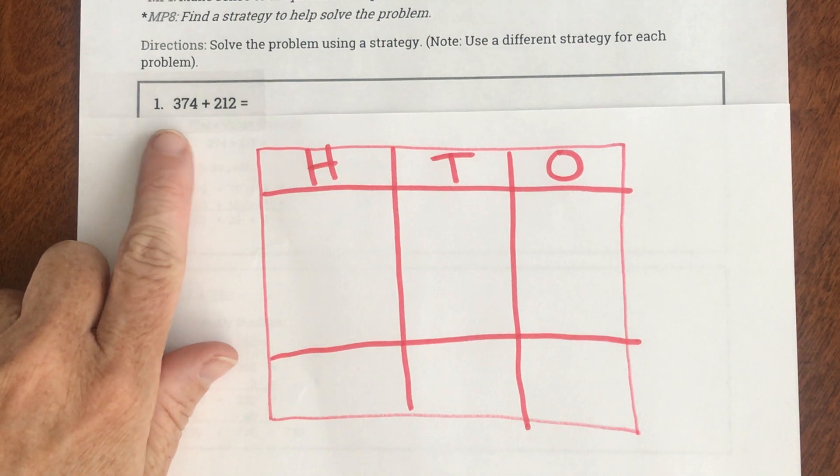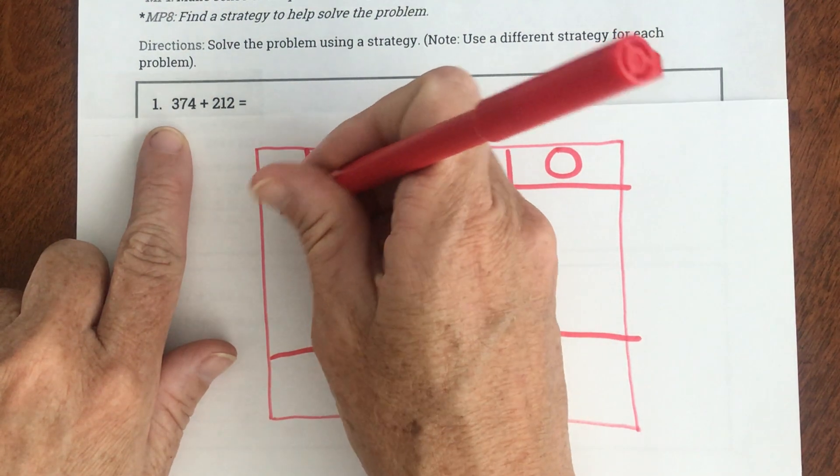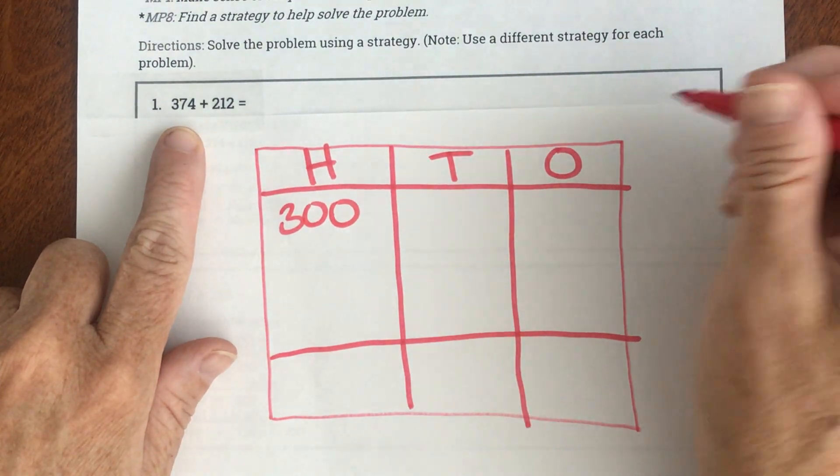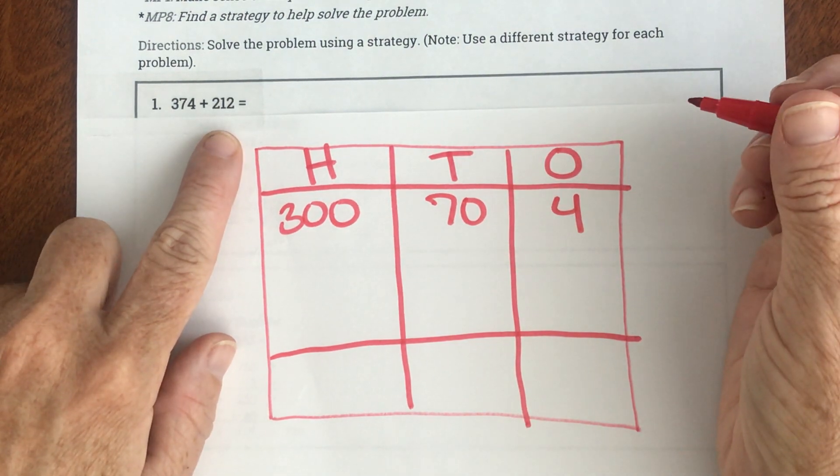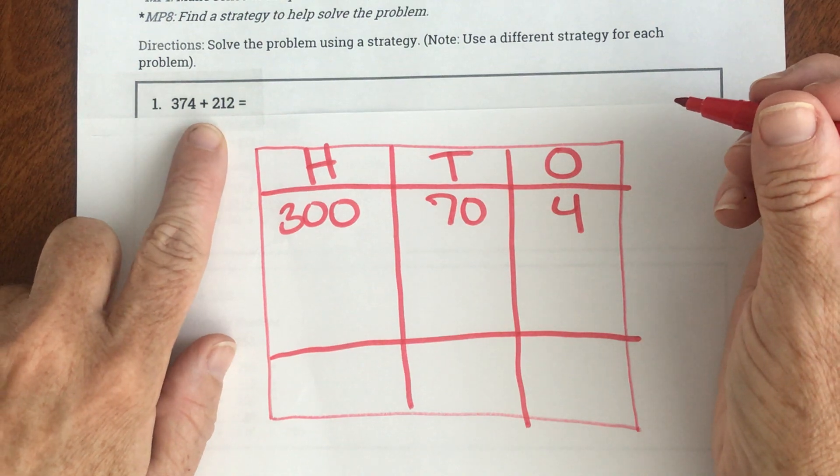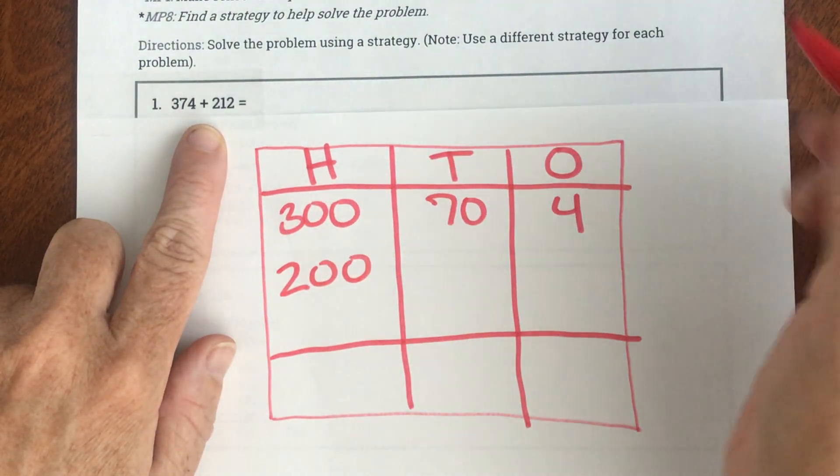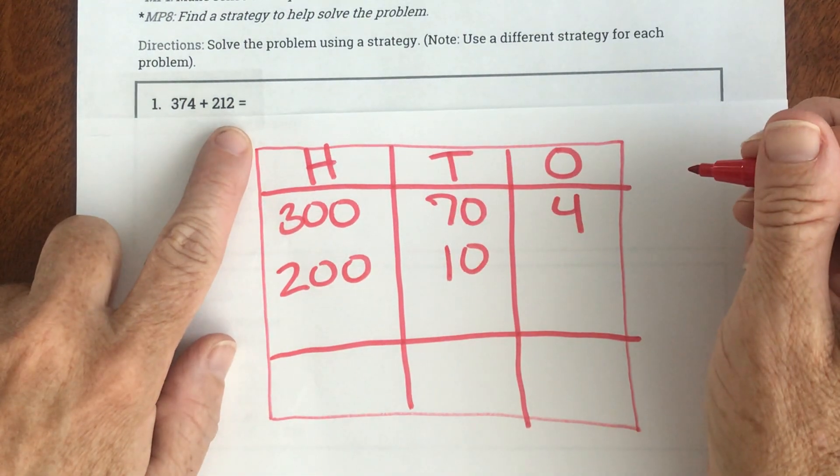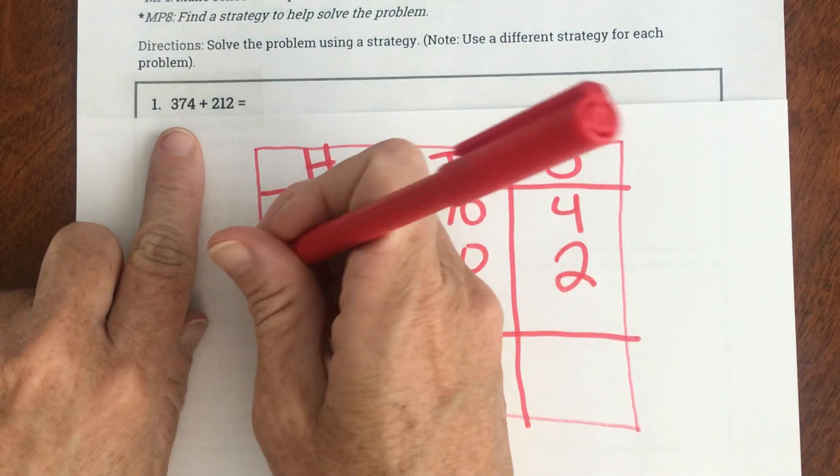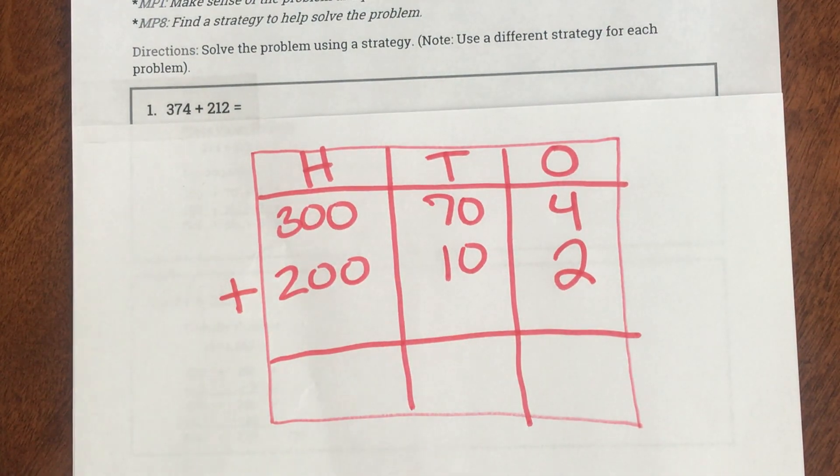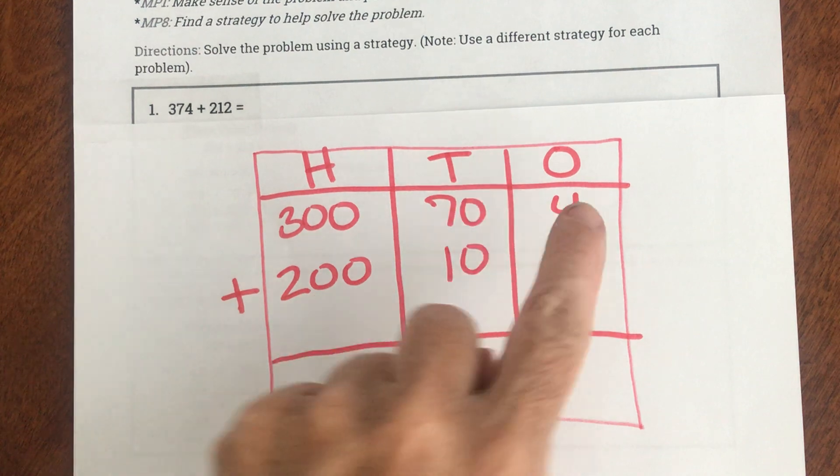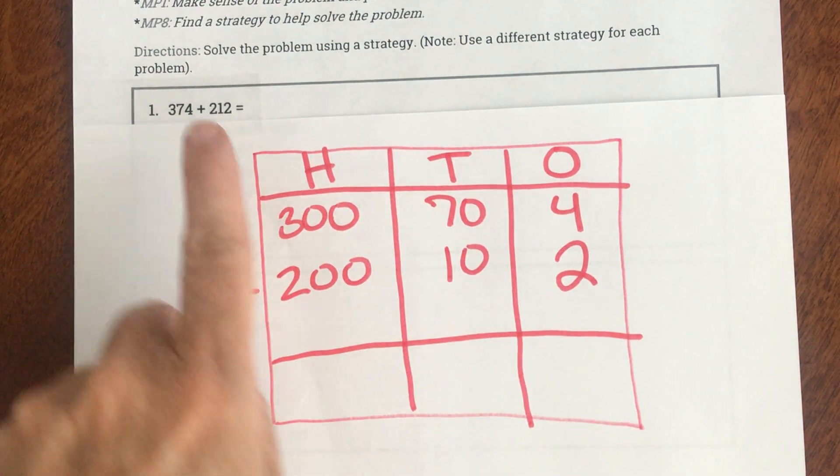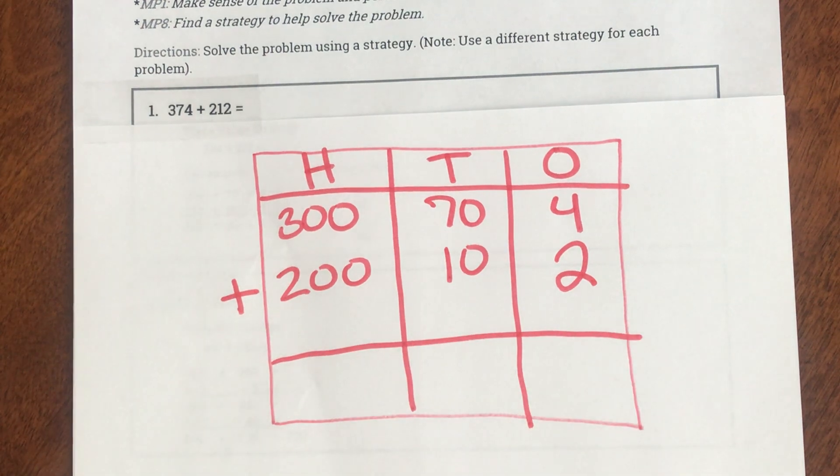So I'm going to decompose this. So if my number is 374, I have three in the hundreds, so I have 300, seven in the tens, so 70, and four in the ones. I also have my other addend is 212, so there's a two in the hundreds, which means 200. There's a one in the tens, which means 10, and there's a two in the ones. So this is what I'm going to be adding. So this is called decomposing when I broke up 374 into 370 and four, and when I broke up 212 into 210 and 12. That was step one.